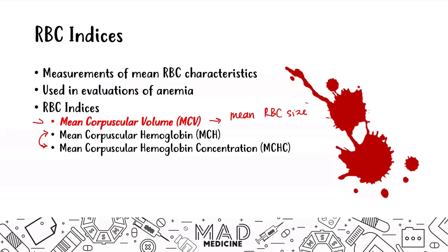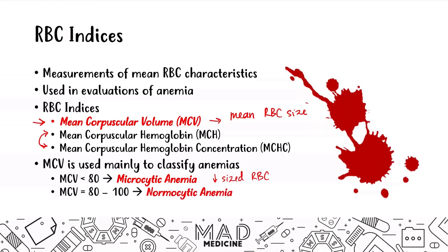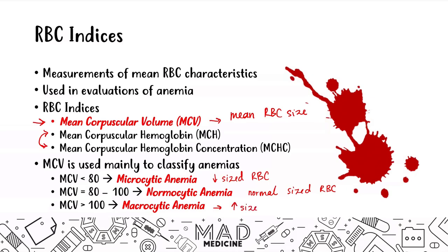The main thing you need to know — and this is very high yield — is that the MCV is very useful in classifying many anemias, which is what we'll use in the next lectures. If you have an MCV less than 80, you're going to have a microcytic anemia, meaning small-sized red blood cells. If you have an MCV of 80 to 100, this is called normocytic anemia — normal sized RBCs, though that doesn't mean they're functioning properly. And if you have an MCV greater than 100, you're going to have large red blood cells, presenting as macrocytic anemia.